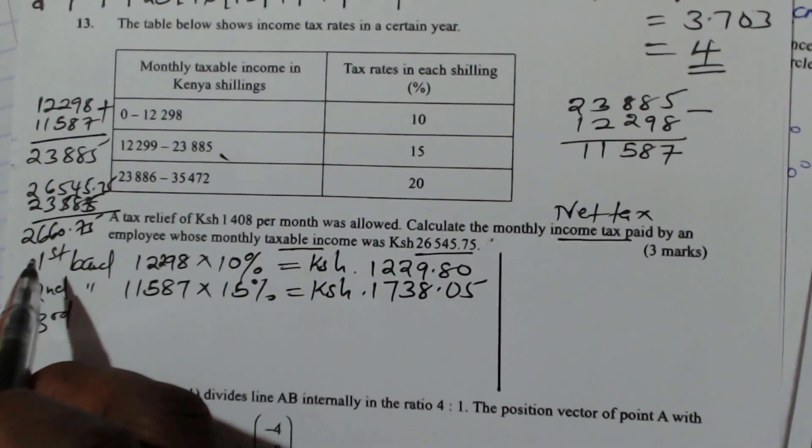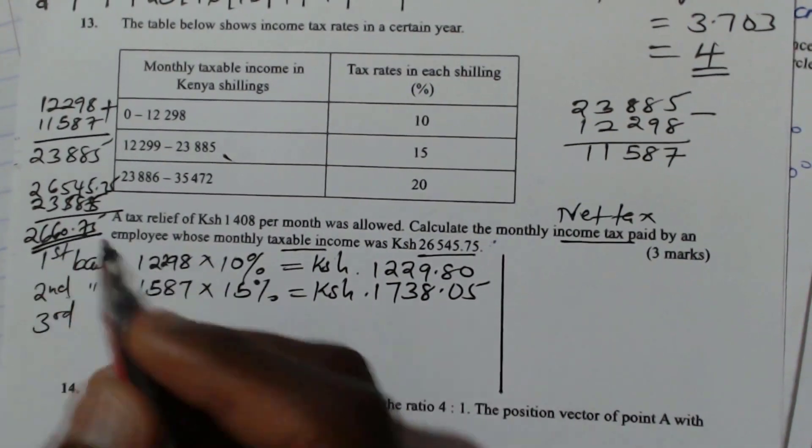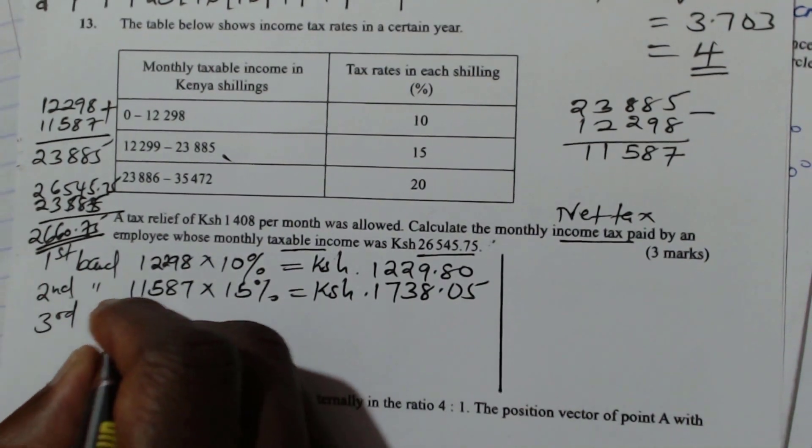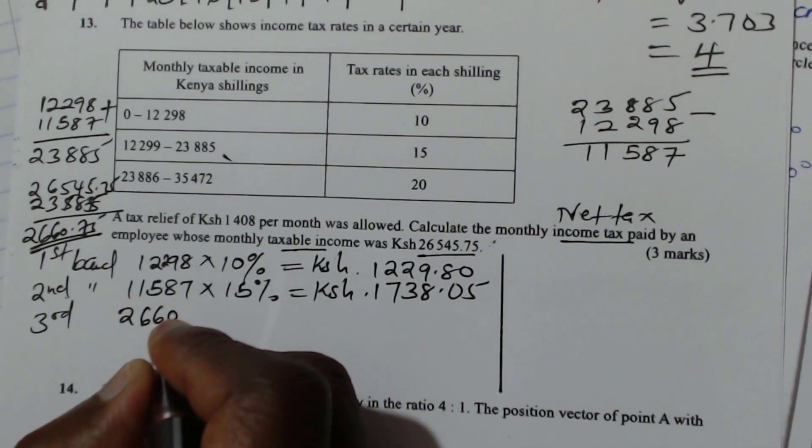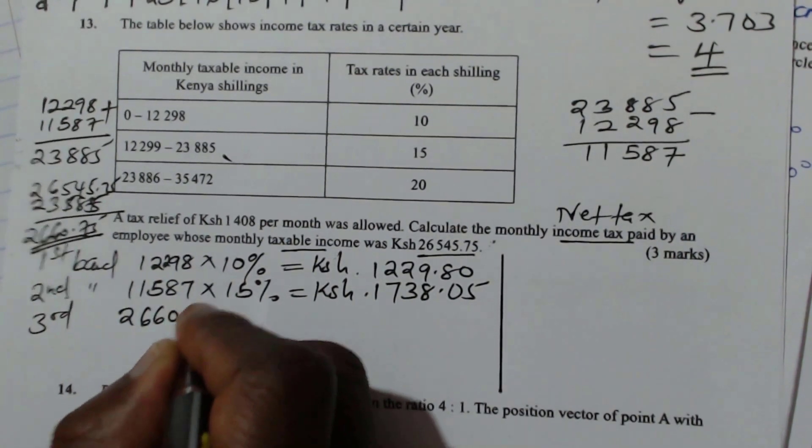So that is what is remaining. So this is the amount that is remaining for the last band. So 2660.75 cents.